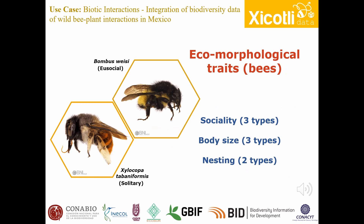In the case of bees, we consider three groups of traits. Sociality: bees can be classified as social, solitary, or parasitic. Body size: bees can be classified as small, equal, or large, depending on whether the size of the specimen is smaller, equal, or larger than Apis mellifera, that is about 10 millimeters. Finally, the nesting traits of the bees can be classified as above ground and below ground.